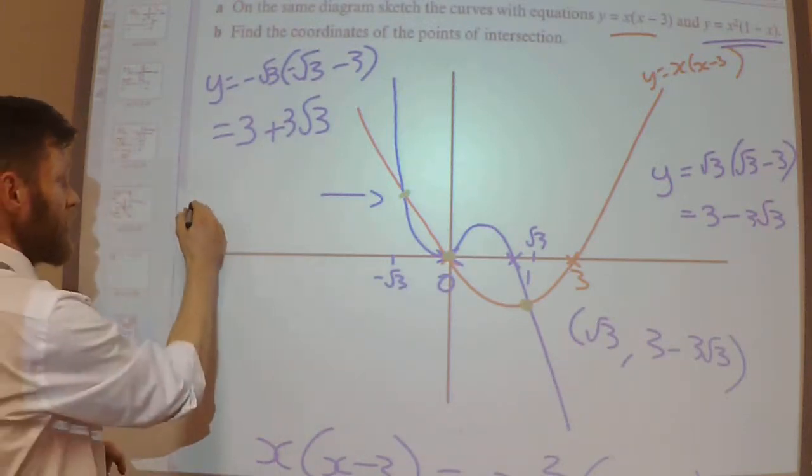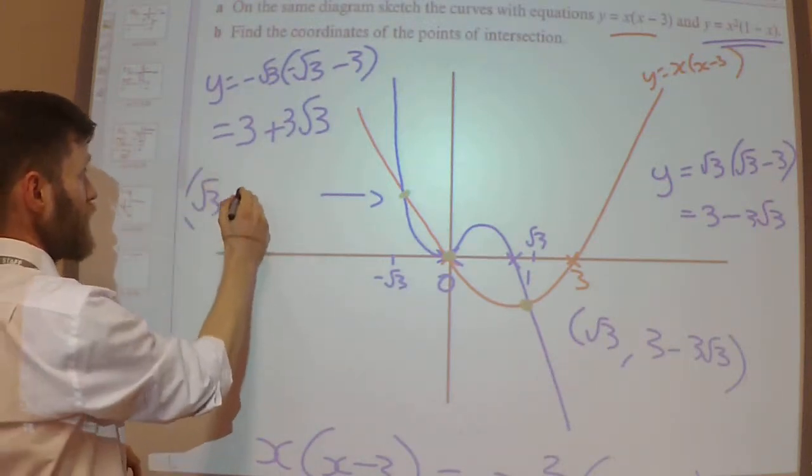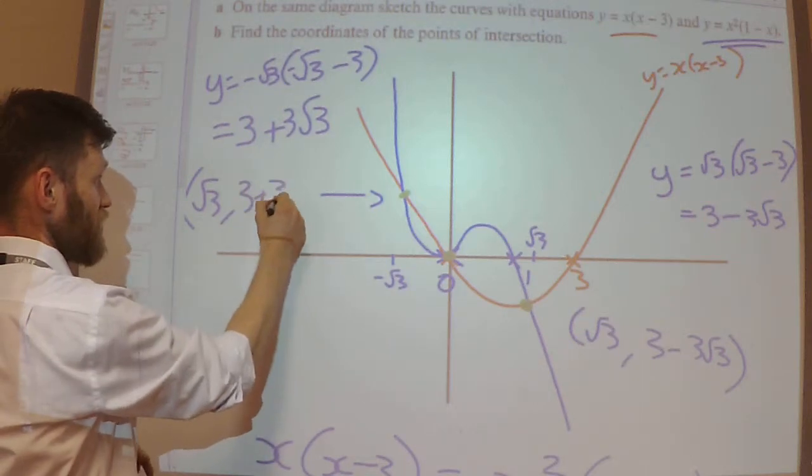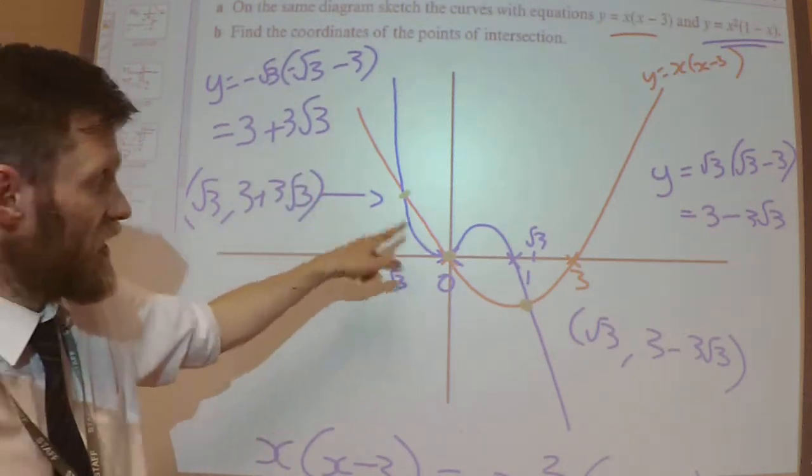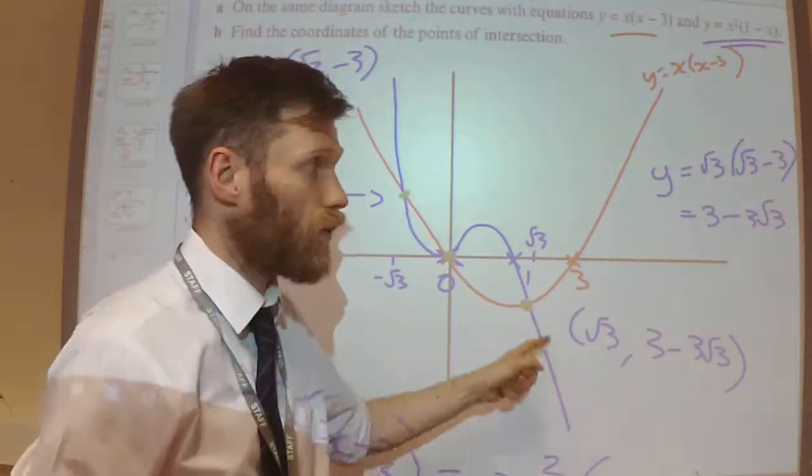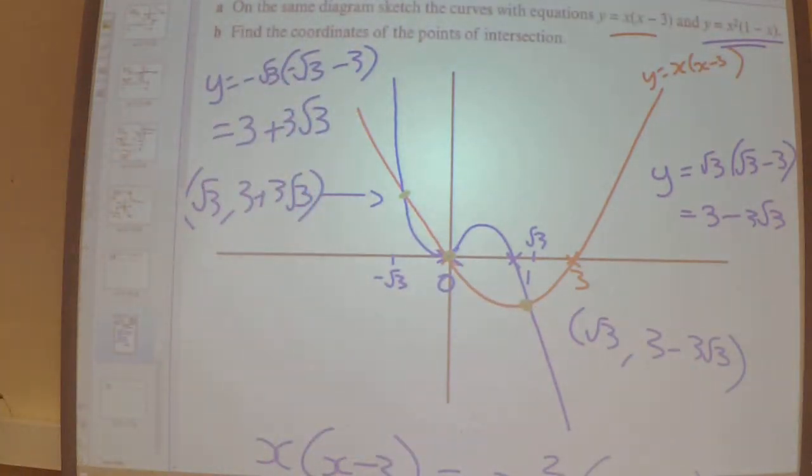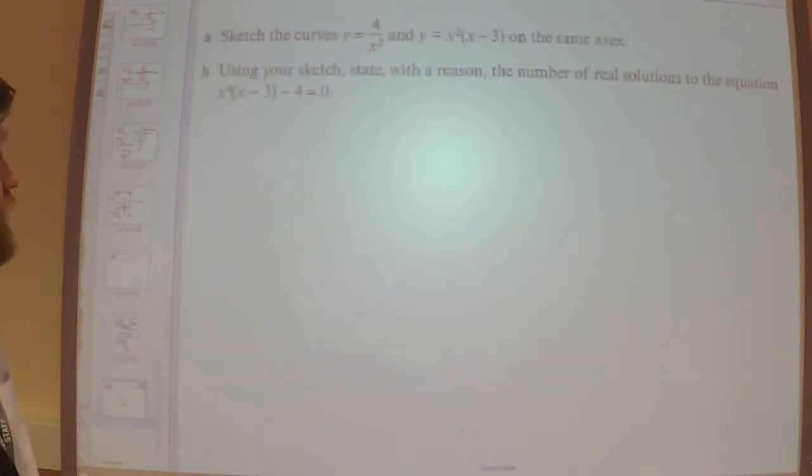So this coordinate is (-√3, 3+3√3). So that's the first coordinate. Then I've got (0,0). And that's that coordinate there. Done. Next.